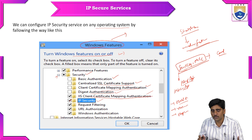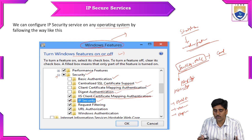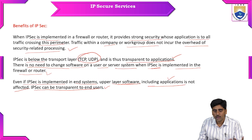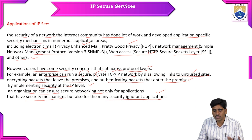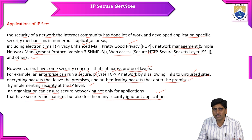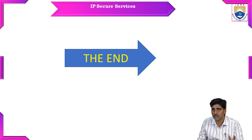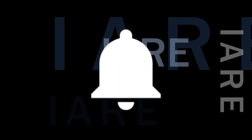To configure IPsec, go to Windows Features, turn it on or off, select IP Security, and click OK. Benefits include strong security through firewalls and routers with no impact to upper-layer software. Applications include electronic email services, file transfer protocol services, and TCP/IP networking services. This is all about IP security services. Thank you all — like, share, and subscribe, and hit the bell icon for more updates.